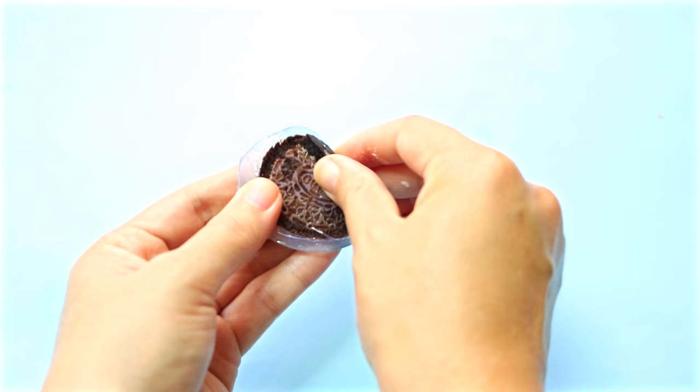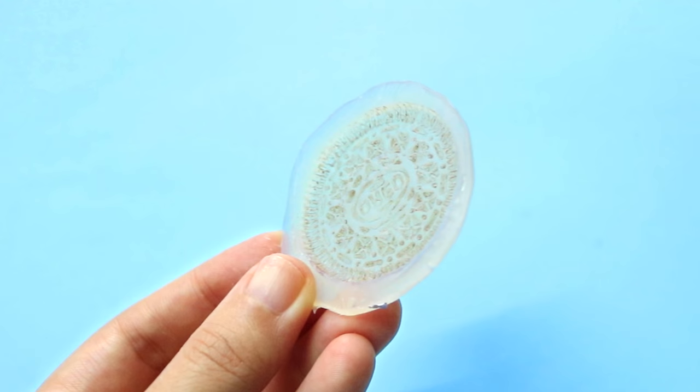Once you're done, you can break up the Oreo to take it out of the glue mold. To clean the mold, you can wash it with some warm soapy water. And here's the final result.